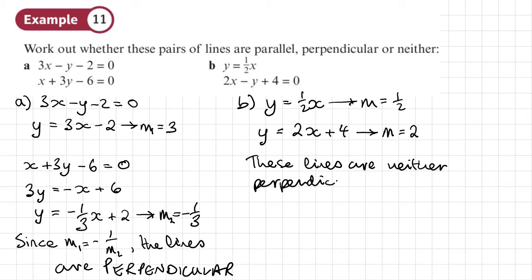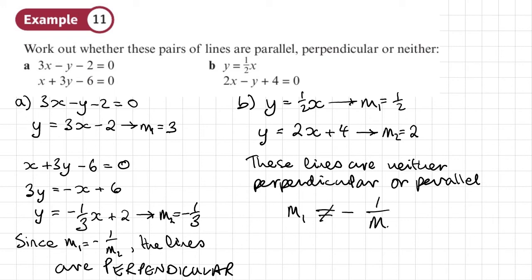There's something else going on, but they're not perpendicular or parallel. If we call these m1 and m2, we can say that m1 does not equal negative 1 over m2.